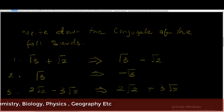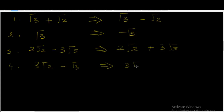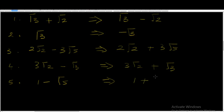Now let's write down the conjugate of another surd. Example four: 3√2 minus √3. The conjugate of this surd can be written as 3√2 plus √3. All I did was change the minus sign to a plus sign. Each time you have a minus sign on the left hand side, the right hand side becomes plus. But if you have a plus sign, the right hand side becomes minus. Example five: 1 minus √5. The conjugate of this surd can be written as 1 plus √5.